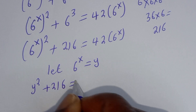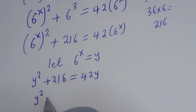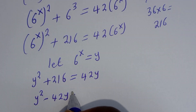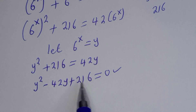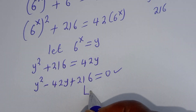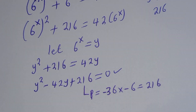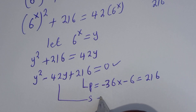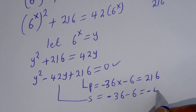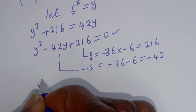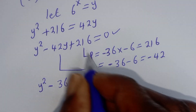This gives y squared minus 42y plus 216 is equal to 0. This is a quadratic equation which can be solved using the factorization method. The product p is equal to negative 36 multiplied by negative 6, which equals 216, and the sum is equal to negative 36 minus 6, which equals negative 42.